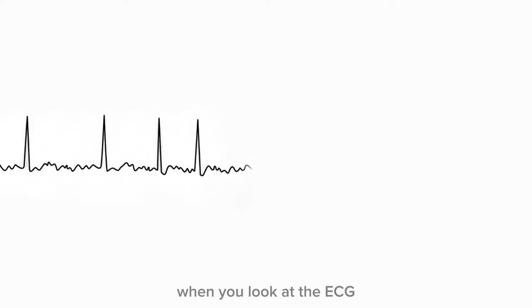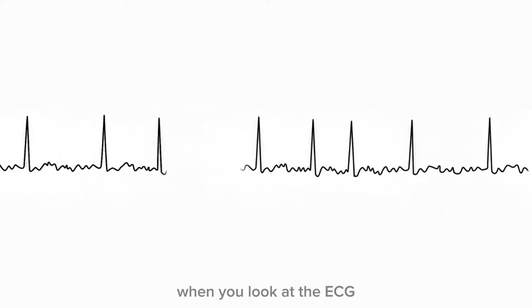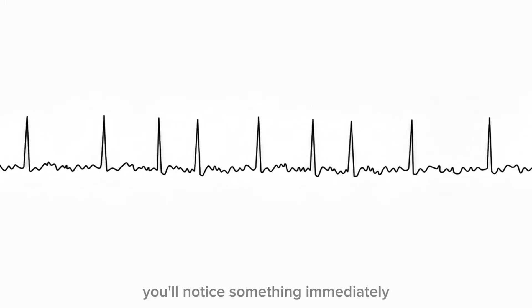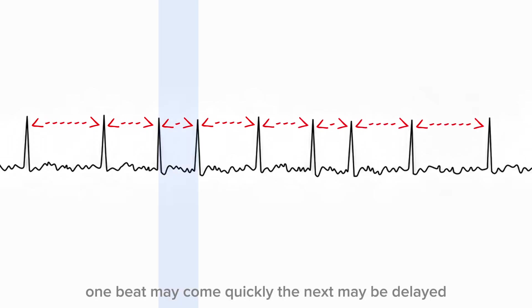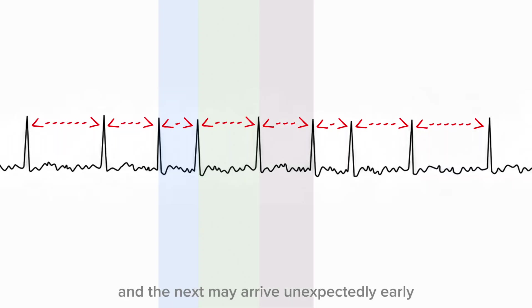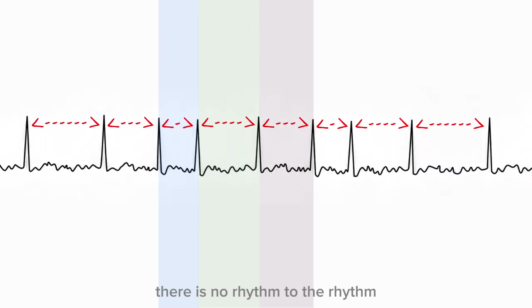When you look at the ECG, you'll notice something immediately: there is no repeating pattern to the RR intervals. One beat may come quickly, the next may be delayed, and the next may arrive unexpectedly early. There is no rhythm to the rhythm.